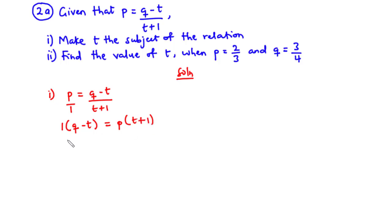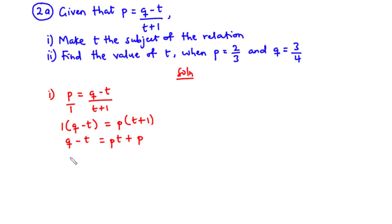We are going to multiply across. 1 times k is k, 1 times t is t, equals p times t is pt, and then p times 1 is p. Now we are going to transpose negative t to the right hand side, so we have k minus p equals pt plus t.